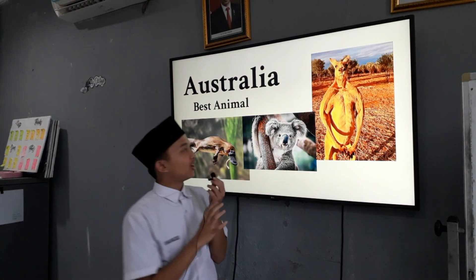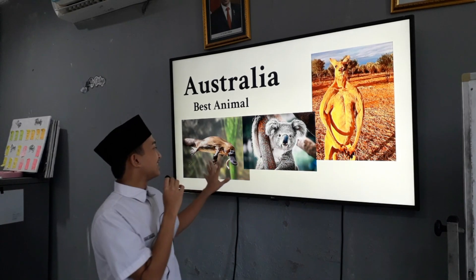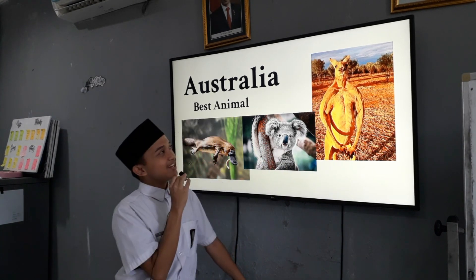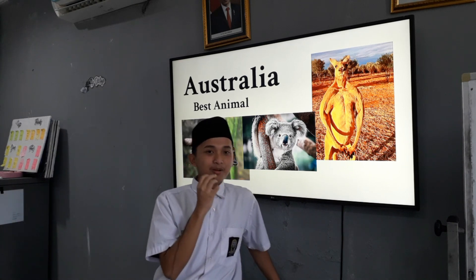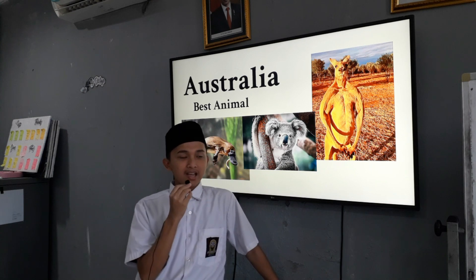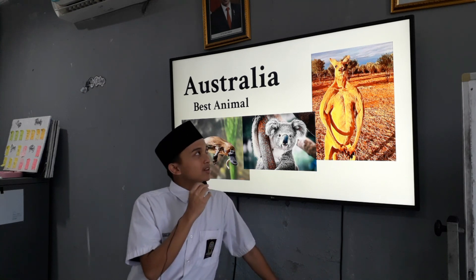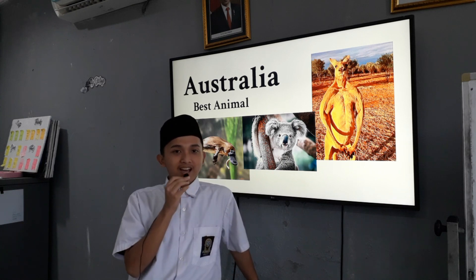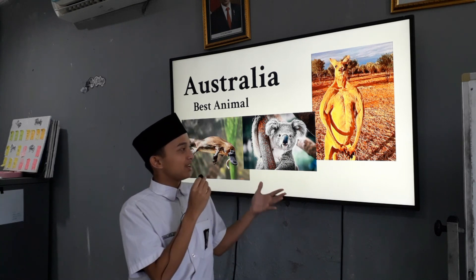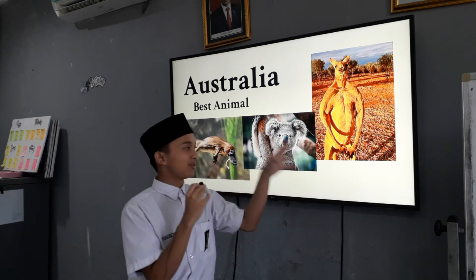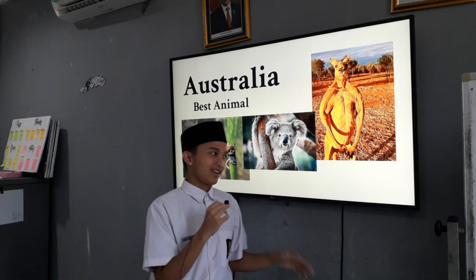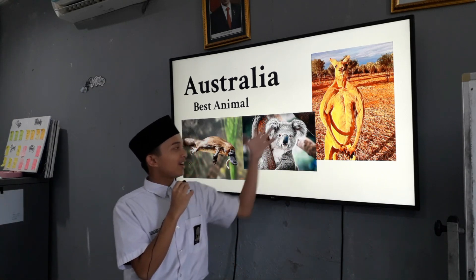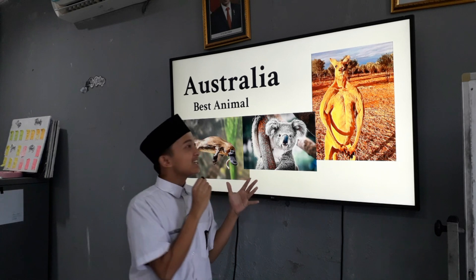Here are Australia's best animals — I picked the top three. First is the muscular kangaroo. Most people know Australia for kangaroos, and Australia is actually the only place that has kangaroos. If other countries want kangaroos, they have to buy them from Australia. Kangaroos also live in the desert.